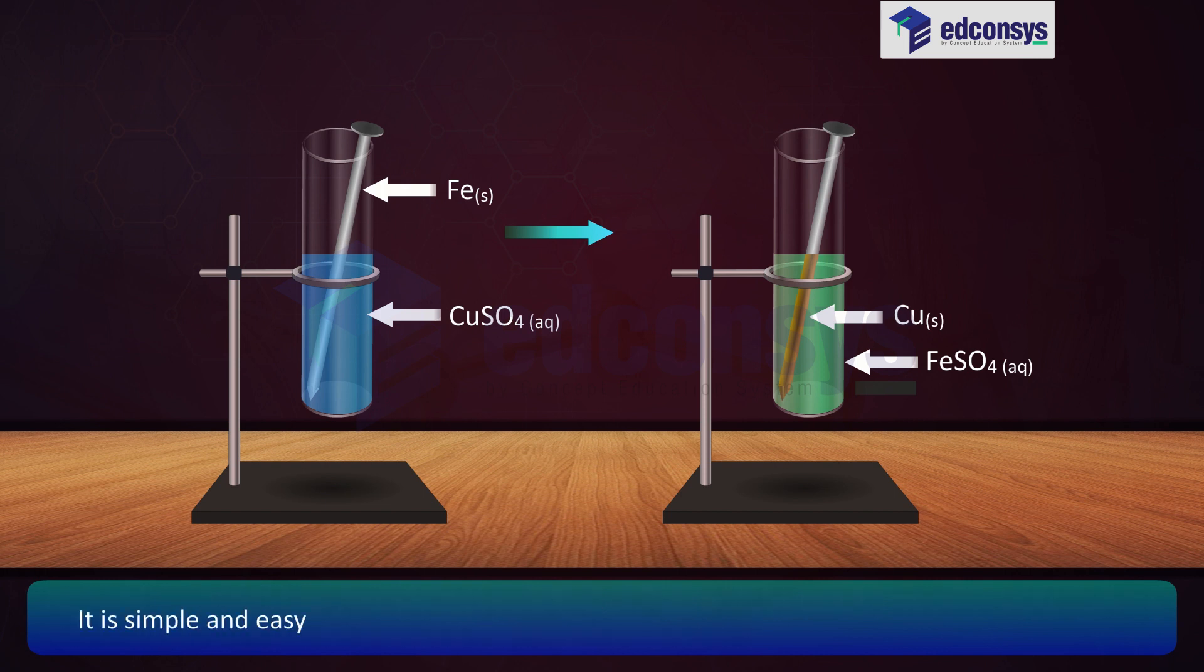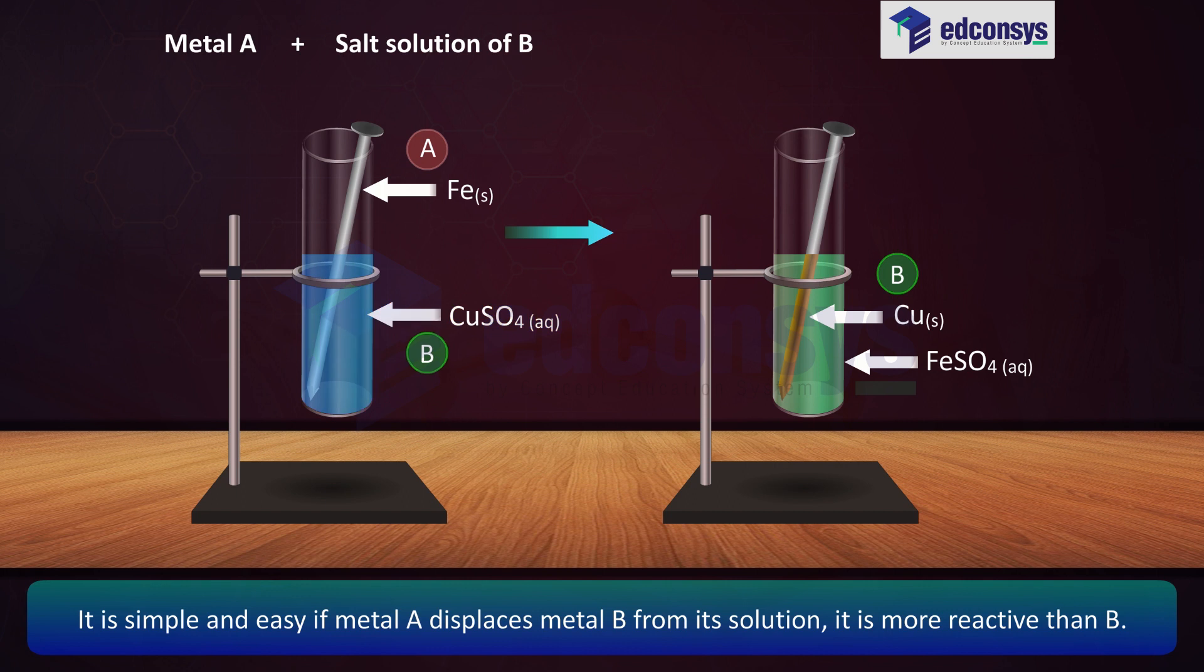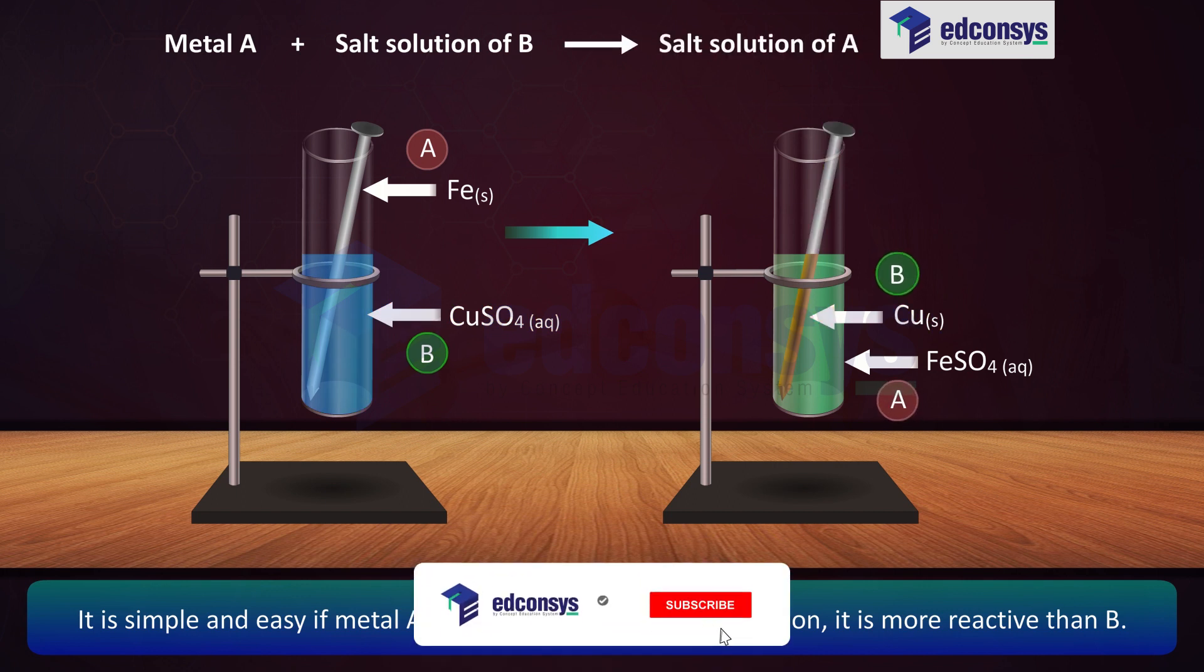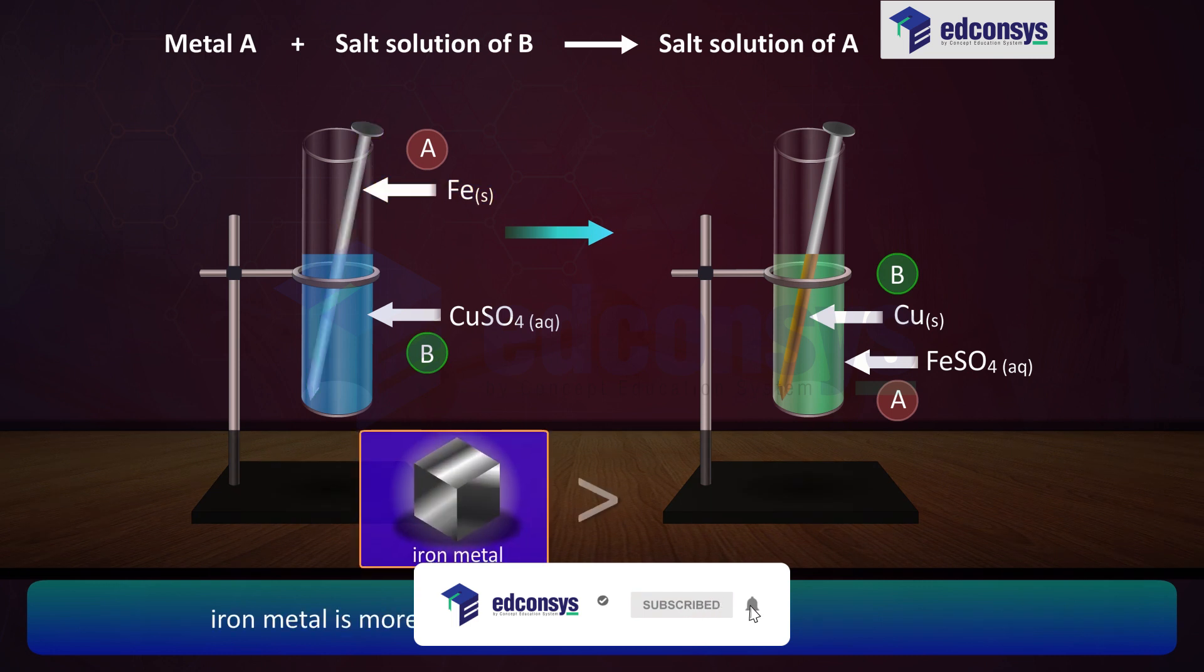Metal A + salt solution of B gives salt solution of A + metal B. Iron metal is more reactive than copper metal.